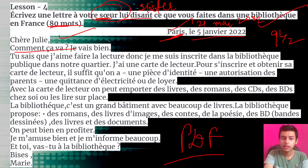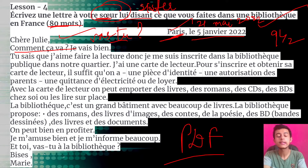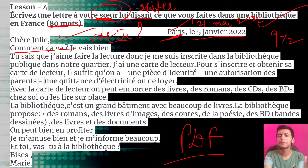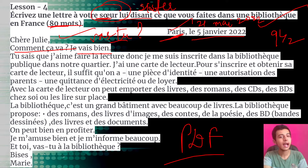Start with 'chère' or 'cher' — both are applicable. If it says 'sœur cadette' that means younger sister, and 'sœur aînée' means elder sister, so change accordingly. For elder people we generally use respectful terms. Then write 'je vais bien' — I am fine — so we start with asking about each other's health.